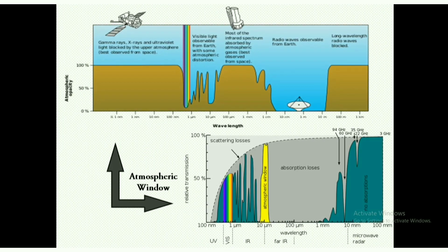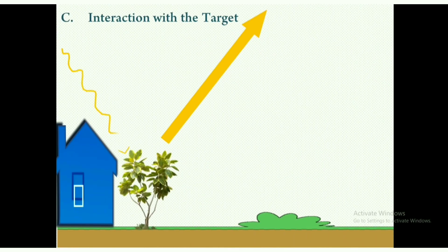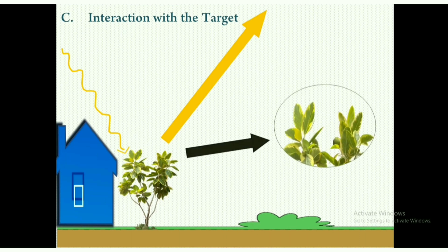Next, the energy which is not scattered or absorbed interacts with the ground or the targeted area. Here also it interacts with the earth's surface in three ways. When the energy absorbs with the targeted area, it is called absorption. When the energy passes through the targeted area, it is called transmission.